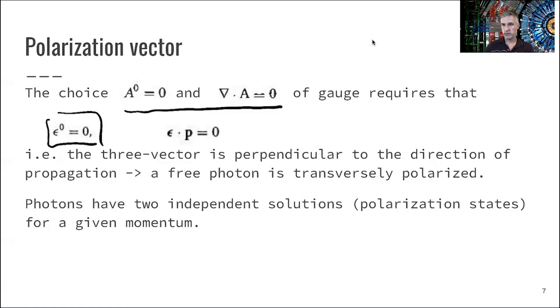So with this now, we have electrons. We can describe those. We can describe photons. The next step now is to look at the Feynman rules, which allows us to describe the interaction between those two.